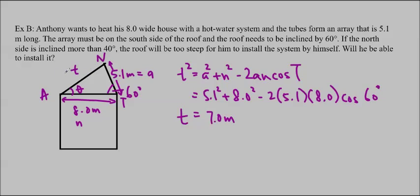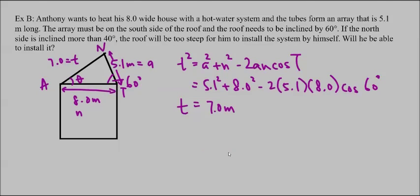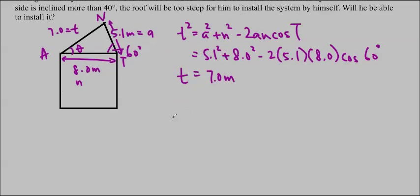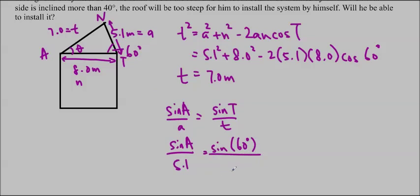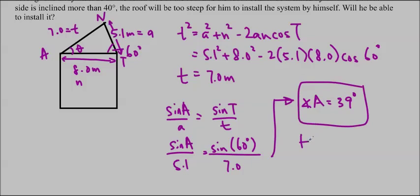Now that we have this length, we can use the sine law to find this angle. Or you could use cosine law, I guess, but it's good to use sine law. It's a little easier to use. We want to find big A. Sine A over little a is equal to sine T over little t. Or in other words, sine A over 5.1 is equal to sine of 60 degrees over 7.0. Type that into your calculator. Make sure you are in degrees. You should get angle A is equal to 39 degrees. Which is safe for Anthony to climb, so he will be able to install it.